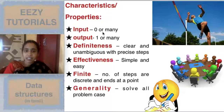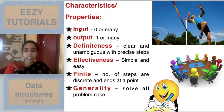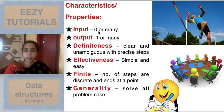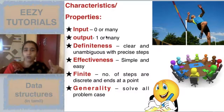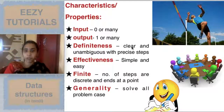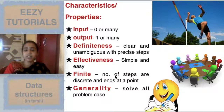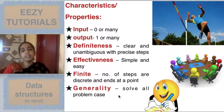The characteristics of an algorithm are: input should be zero or many — for example, a Fibonacci series for the first 10 numbers requires no input, so input can be zero. Output should be one or many; you must get at least one output. Definiteness means clear and unambiguous with precise steps. Effectiveness means simple and easy. Finiteness means the number of steps should be discrete and stop at some point.